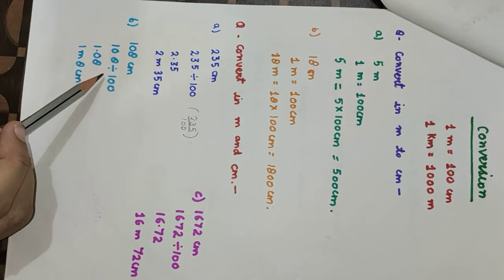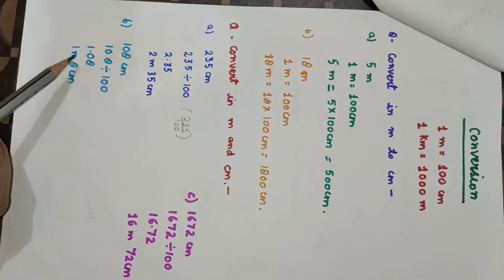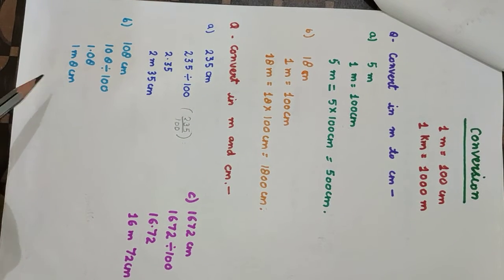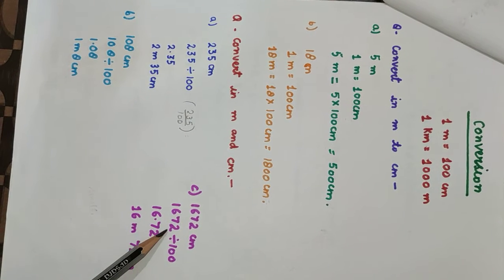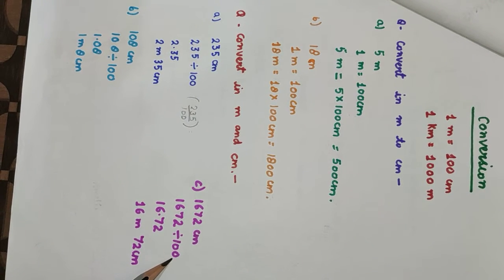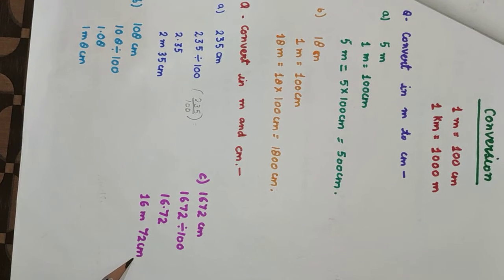108 centimeters: 108 divided by 100 equals 1.08, which we write as 1 meter, 8 centimeters. 1672 centimeters: 1672 divided by 100 equals 16.72, which we write as 16 meters and 72 centimeters.